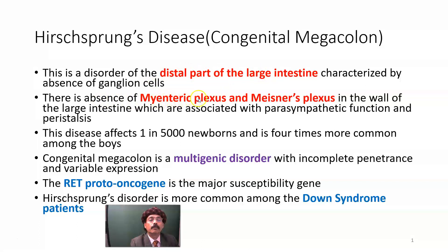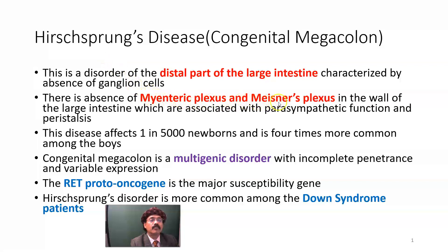There is absence of the myenteric plexus, also called the Auerbach's plexus, that is present between the longitudinal muscle layer and the circular muscle layer of the intestine, and Meissner's plexus, that is the plexus present in the submucosa of the wall of the large intestine. In Hirschsprung's disease, the myenteric plexus and Meissner's plexus in the large intestine will be absent.